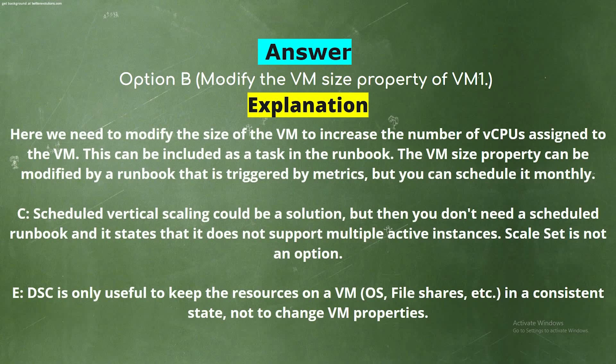The correct answer is Option B — modify the VM size property of VM1. We need to modify the size of the VM to increase the number of vCPUs assigned to it. This can be included as a task in the runbook, triggered by metrics or scheduled monthly. Option C is not valid because the app doesn't support multiple active instances. Option E — DSC — is only useful to keep resources on a VM OS, file shares, etc., in a consistent state, not to change VM properties.